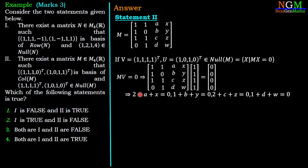This gives us four equations: 1 + 1 + A + X = 0, that means 2 + A + X = 0. Second condition: 1 + B + Y = 0. Third condition: 1 + 1 + C + Z = 0, that means 2 + C + Z = 0. And the fourth condition: 1 + D + W = 0.